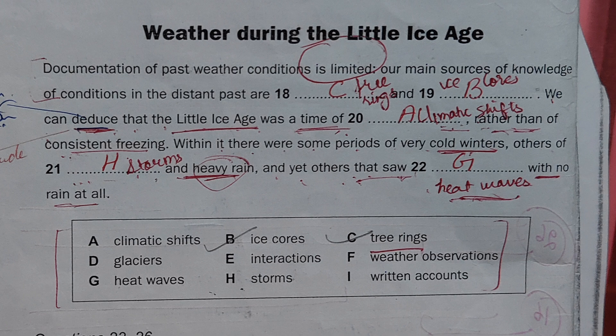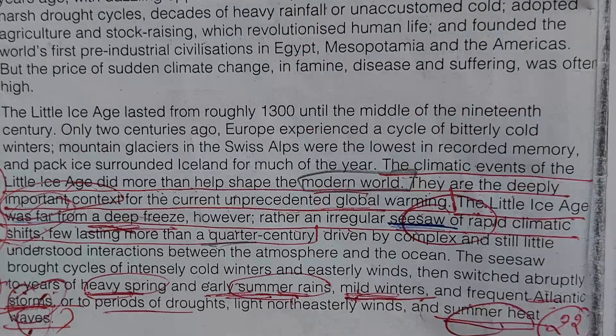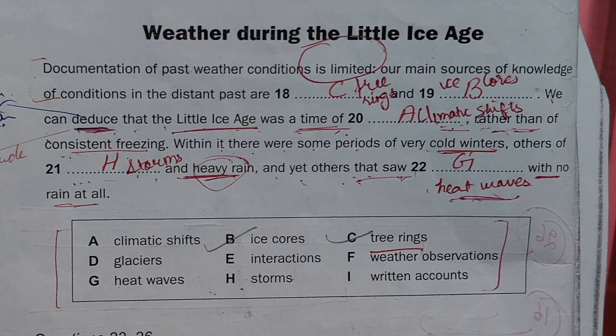Next: we can deduce that the Little Ice Age was a time of something rather than of consistent freezing. Consistent freezing ki bajai Little Ice Age kuch aur thi. The Little Ice Age was far from a deep freeze, however rather an irregular seesaw of rapid climatic shifts. So the answer is climatic shifts.